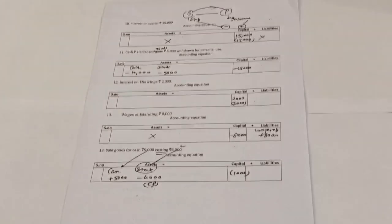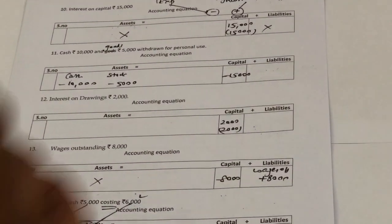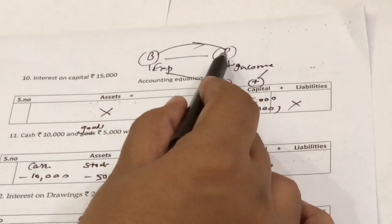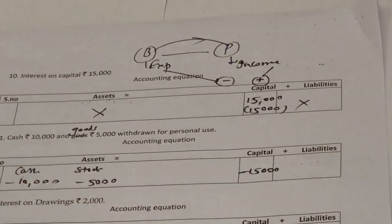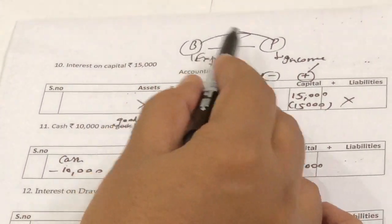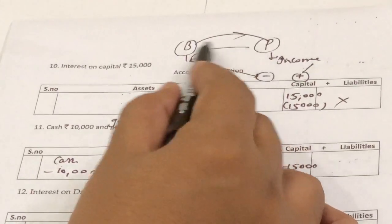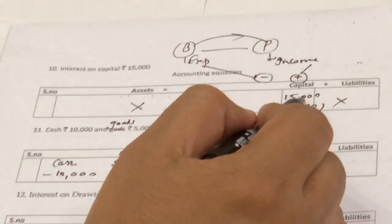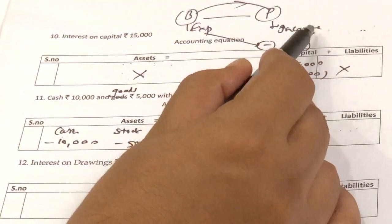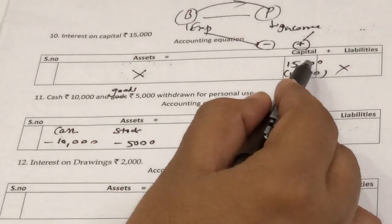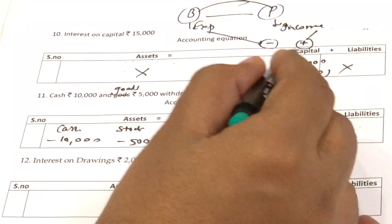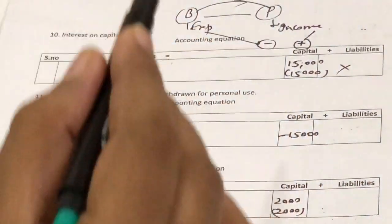Next transaction: interest on capital is 15,000. As per the separate entity concept, the business and the proprietor are two different persons. The business paying interest to the owner is an expense for the business but a profit for the proprietor. So we subtract from capital as an expense and add back to capital as income — both adjustments happen in capital only. There is no treatment on the asset side or the liability side.